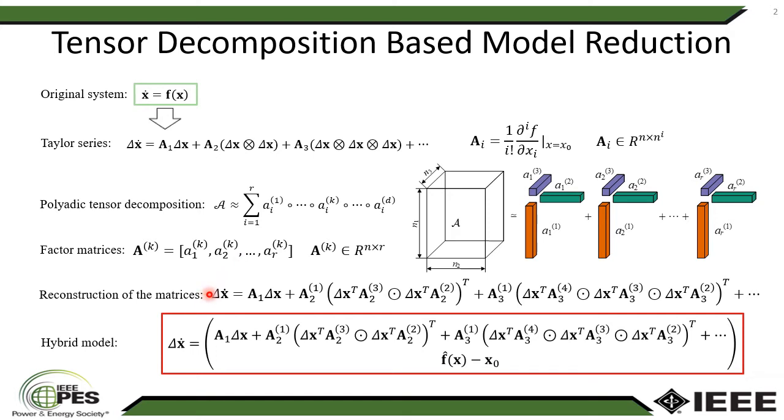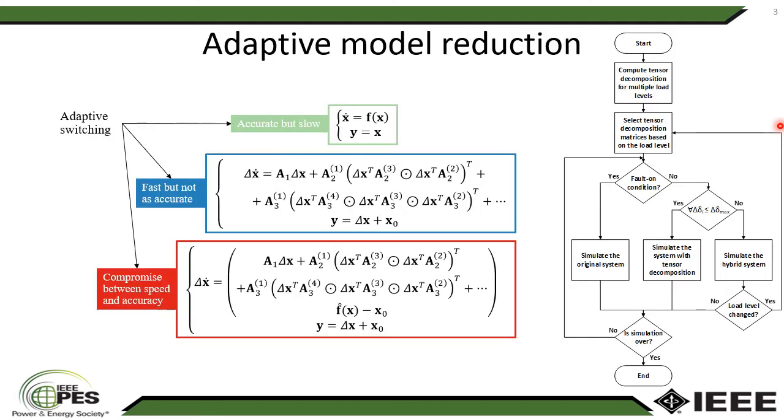And we can use this approximated formulation in the hybrid model where generators that are important for the investigator are represented by the original non-linear functions, and the rest of generators are approximated using this Taylor series approximation. And this hybrid model is of the adaptive model reductions where we switch the complexity of the system based on operating condition.